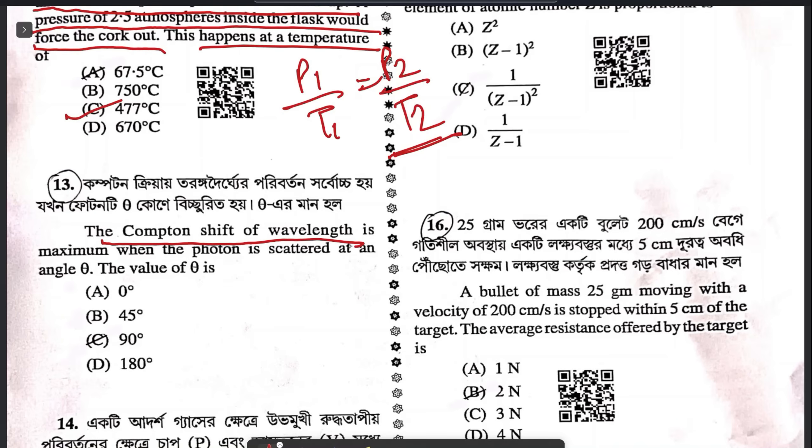Question 13: the Compton shift of wavelength is maximum when the photon is scattered at an angle theta. The value of theta should be 180 degrees.